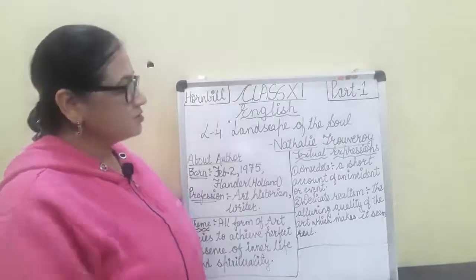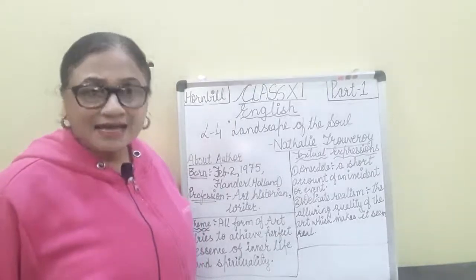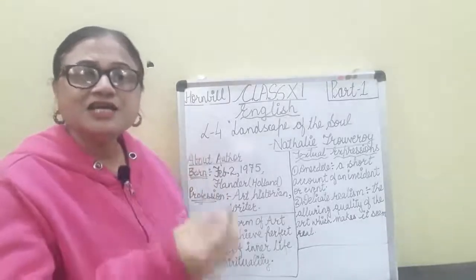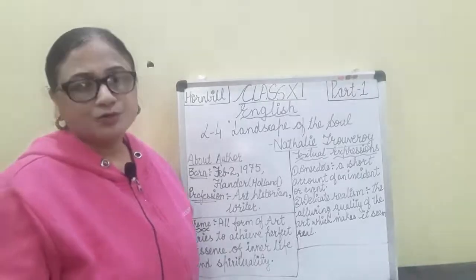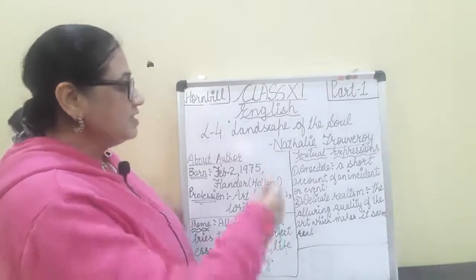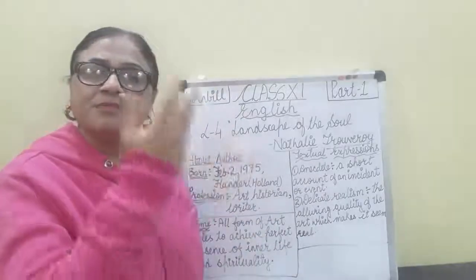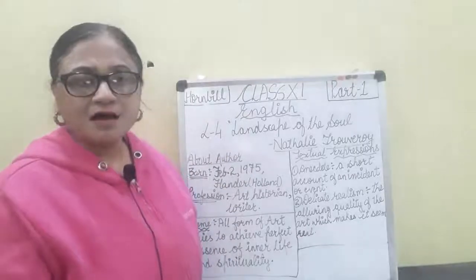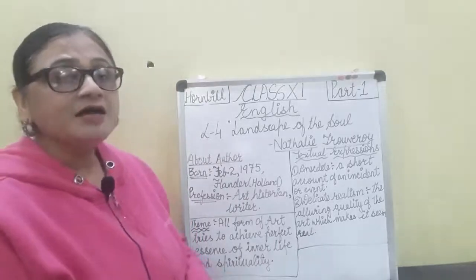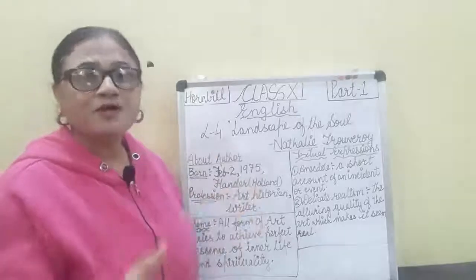Let us talk about the textual expressions in the lesson. The first is anecdote — an anecdote means when a very small incident or event occurs in a short time. Next is delicate realism, which is the alluring quality of art that makes it seem real. Even if you are copying some form of art, when you are practicing it, it seems to be real — as though you have not copied it at any point. When you present any art form to an audience, it should look real even if it originates from another art.